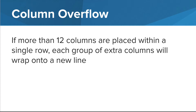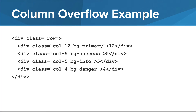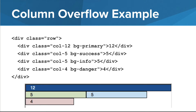If more than 12 columns are placed within a single row, each group of extra columns will wrap onto a new line. Here's an example where the div elements on a row add up to more than 12 columns. These divs also have background color attributes that use the Bootstrap color classes — for example, the primary color is blue, and the danger color is red. The first div will take up the entire row because it's 12 columns. The second and third div will be in the second row, taking up 5 columns each for a total of 10 columns. When we get to the fourth div, we have to wrap onto a new line, because 10 plus 4 is greater than 12, so the entire fourth div is placed on the third row.